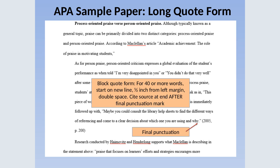Earlier we talked about in-text citation for a long quote — this is the block quote form again. It is indented half an inch from the left margin, so it starts where paragraphs start. It is double-spaced, and the citation comes after your final punctuation mark. This particular long quote ends with quotation marks because it is a quote within a quote. Typically, if it's just research you're pulling to quote yourself, you would not have a quotation mark at the end.